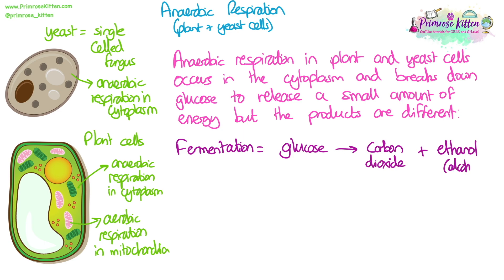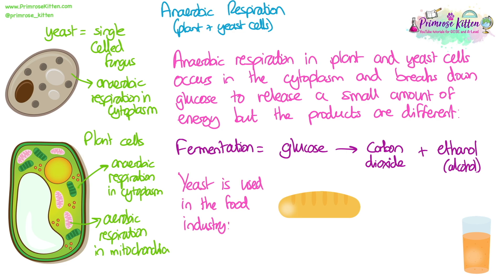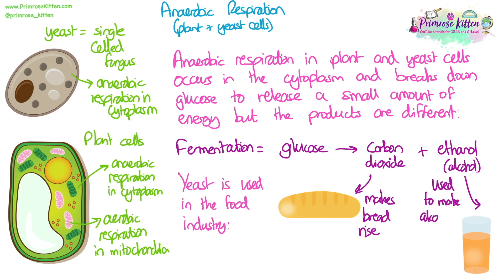In yeast and plant cells, glucose breaks down to form carbon dioxide and ethanol. Yeast's anaerobic respiration is used in the food industry — the carbon dioxide from fermentation is used to make bread, and the ethanol produced is used in making alcoholic drinks such as beer and wine.